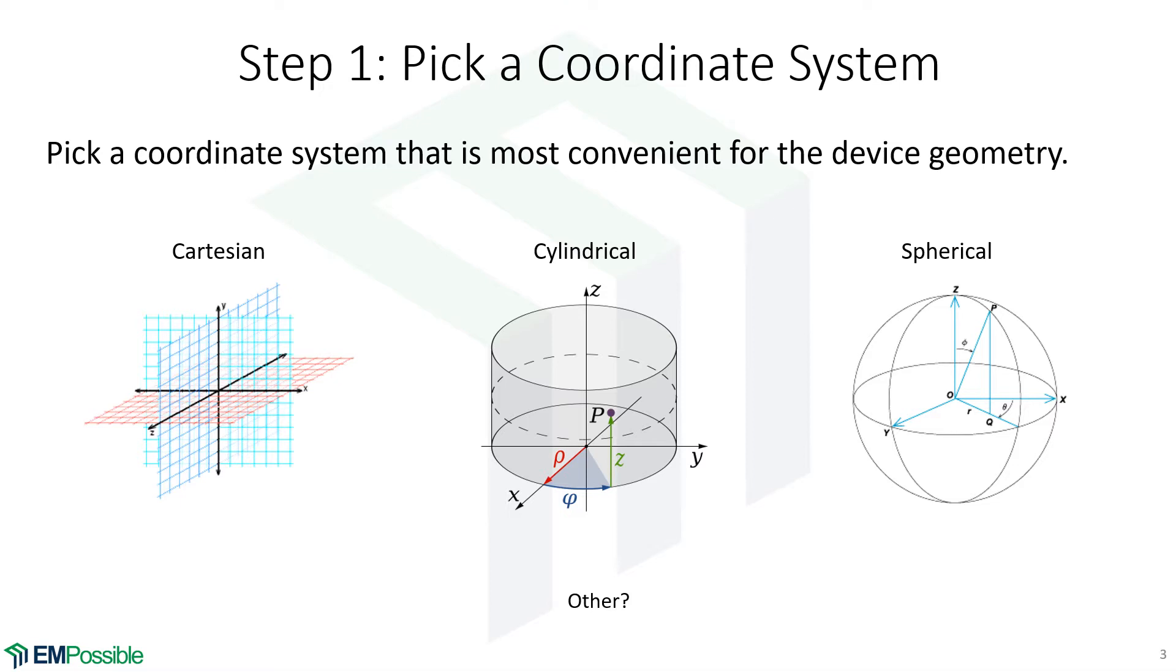If it's rectangular or sort of things, then the Cartesian coordinates would be most convenient. When we begin to do this numerically, we'll do exclusively Cartesian. Even if our cloak has cylindrical or spherical symmetry, we can still do that on a Cartesian grid. And since the computer is doing all the work for us, that doesn't matter.